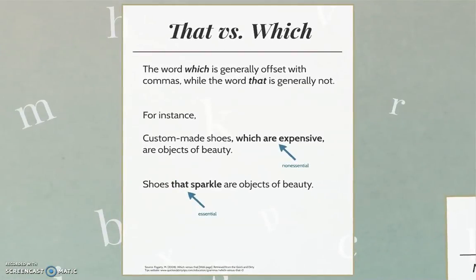Please note that the word 'which,' along with the clause that follows it, is generally offset with commas, while the word 'that,' along with the clause that follows it, is generally not. For instance: custom-made shoes, which are expensive, are objects of beauty. The phrase 'which are expensive' is offset with commas because the phrase is non-restrictive, and thus not essential to the meaning of the sentence.